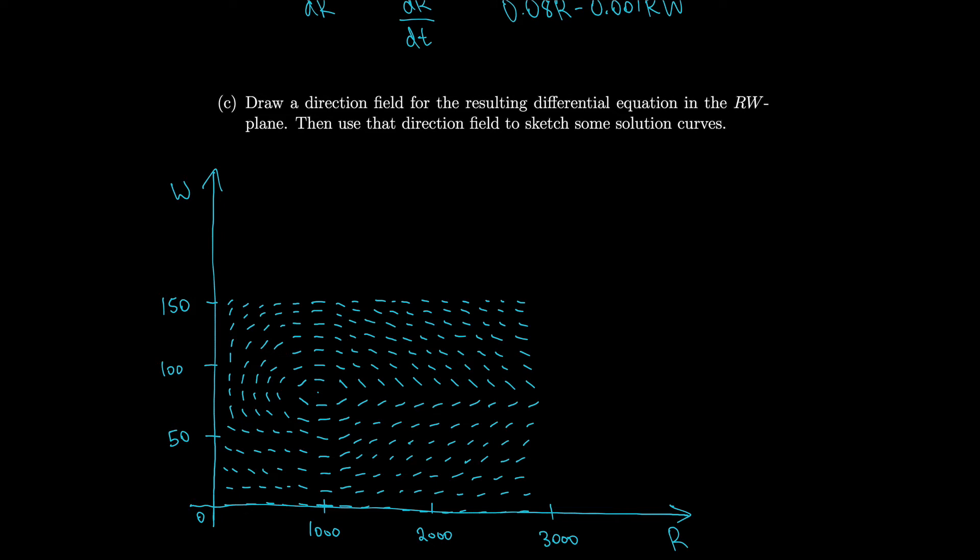We now want to use the direction field to sketch some solution curves. How about we do one over here around our equilibrium solution. We can do another one. So we get all of these nice solution curves. You can see that they get kind of egg-shaped the farther you go out.